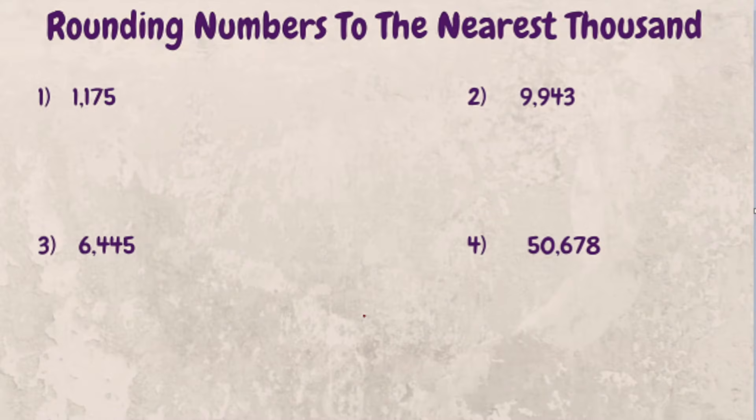In today's video, we're going to talk about how you round to the nearest thousand. The steps we're going to follow are: we're going to identify what number is in the thousand place, then we're going to look at the digit to the right and evaluate.